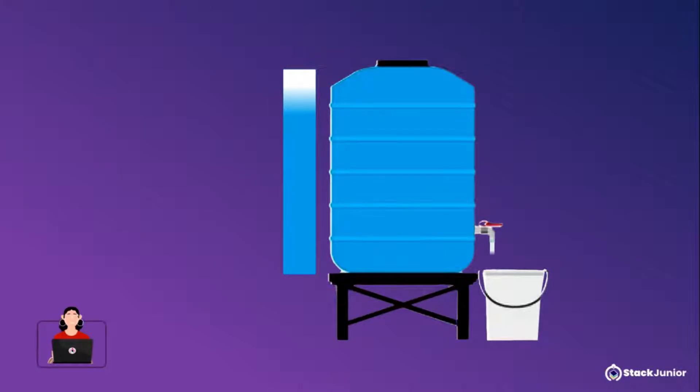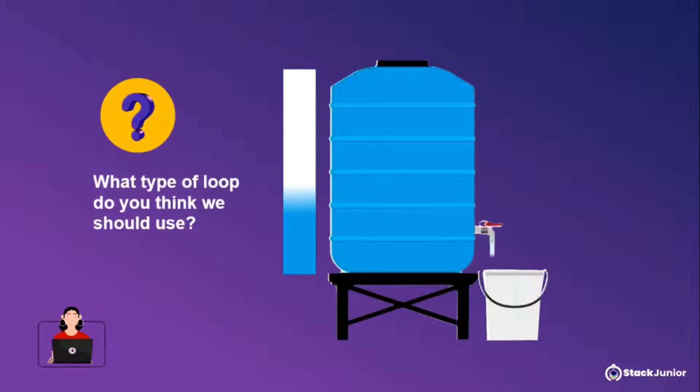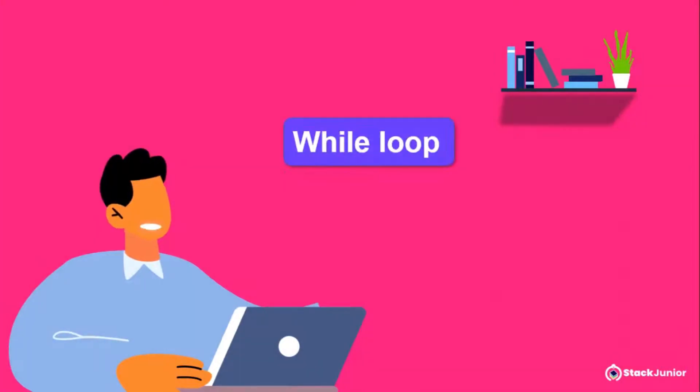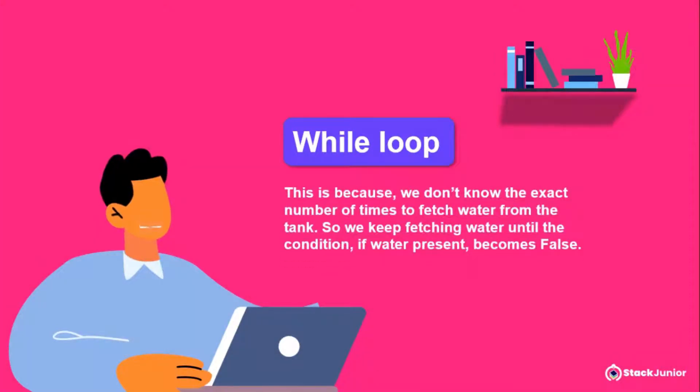So we decide to fetch water until the tank becomes empty. What type of loop do you think we should use? I believe it's a while loop. This is because we don't know the exact number of times to fetch water from the tank.